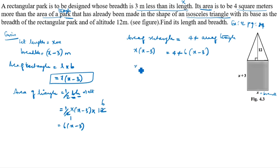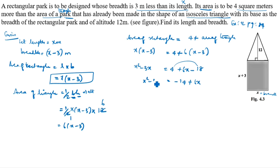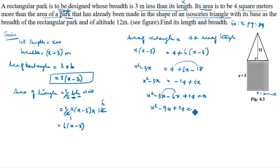Multiplying out, x squared minus 3x equals 4 plus 6x minus 18. So x squared minus 3x equals 6x minus 14. Bringing everything to one side: x squared minus 3x minus 6x plus 14 equals 0. Using the factor tree method for 14: minus 2 times minus 7 gives plus 14, and minus 2 plus minus 7 gives minus 9.